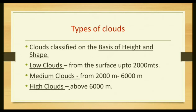Clouds are classified on the basis of height and shape. This classification was given by Luke Howard, an English biologist who wrote about it in his book in 1803 — Classification and Identification of Clouds. He identified clouds on the basis of height, shape, and color. The classification is as follows: low clouds, from the surface up to 2,000 meters, include Stratocumulus, Nimbostratus, Cumulus, Cumulonimbus, Stratus, and Nimbus. Nimbus is a rain-bearing cloud which results in rainfall near the surface of the Earth.